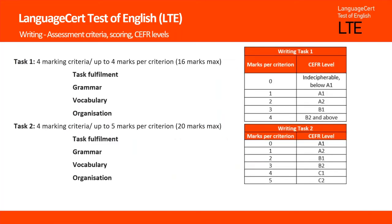The assessment criteria, scoring, and the related Common European Framework levels. To evaluate the candidate's response to task one, the assessor will use four criteria: task fulfilment, grammar, vocabulary and organisation, and award up to four marks per criterion. This will result in a total of 16 marks.